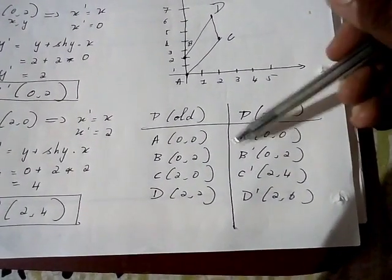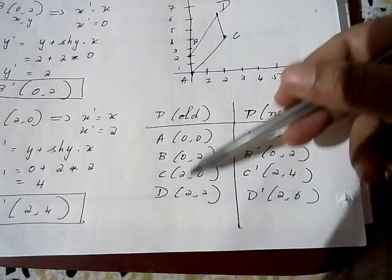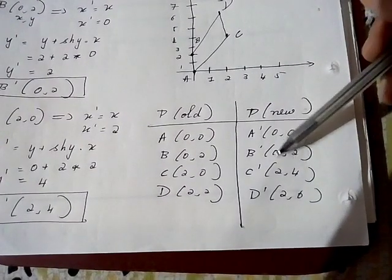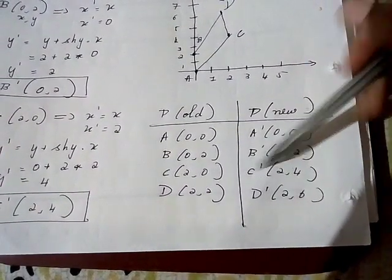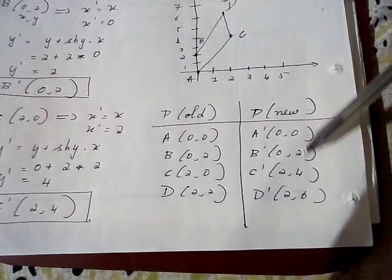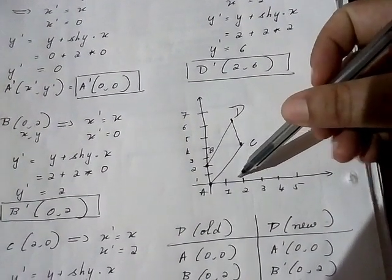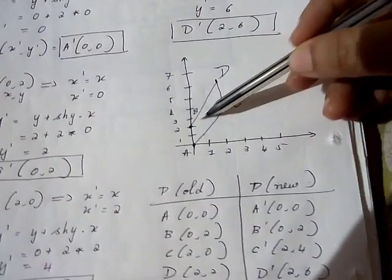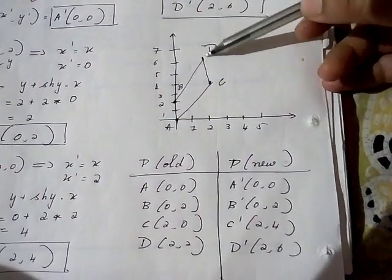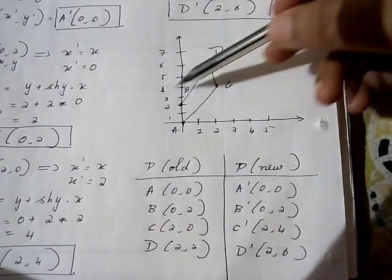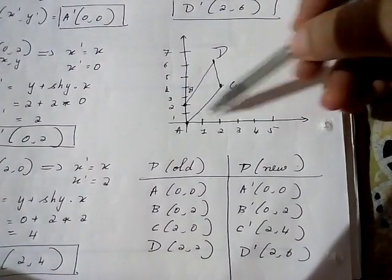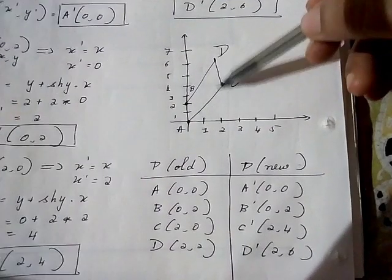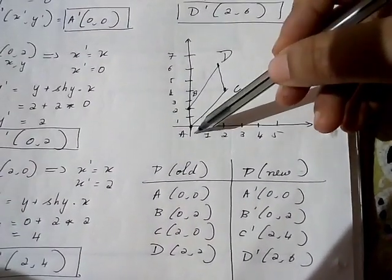Comparing old and new coordinates: x values are all the same (0,0,2,2), but y coordinates have changed. Plotting the new graph: A(0,0), B(0,2), C(2,4), D(2,6) — there is distortion in the y axis and no distortion in the x axis. Previously it was slanting across y (x-shear), now it slants across x (y-shear). This concludes the topic of shearing.